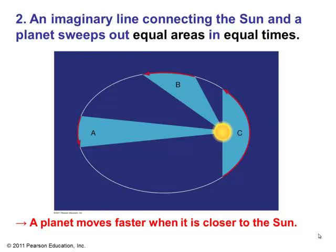Kepler's Second Law says that a line joining a planet to the Sun sweeps out equal areas in equal intervals of time. The three shaded areas — A, B, and C — in the picture are all equal. Any object traveling the elliptical path takes the same amount of time to cover each distance. This means a planet moves faster when it is closer to the Sun, because it must cover a larger arc in the same time, and slower when it is further away.